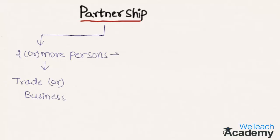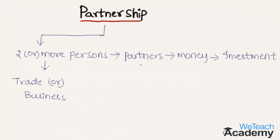The persons who join are called partners, and the money contributed by them is called the investment or capital. The partners share their profit and loss at their agreed ratio.